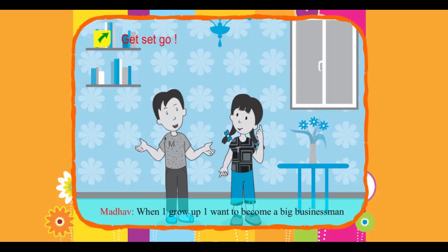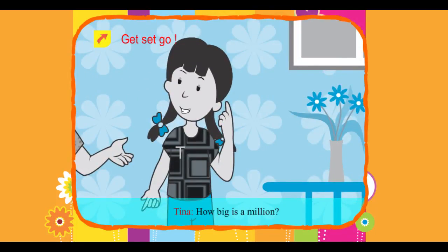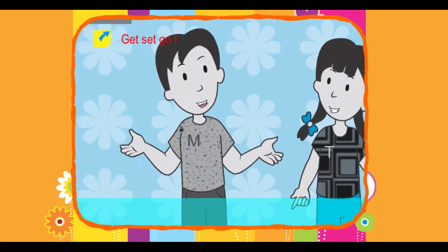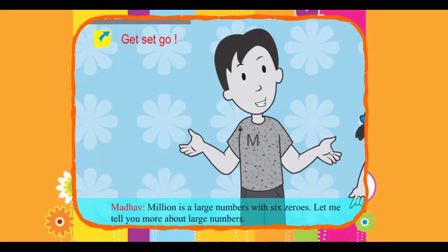Madhav: When I grow up, I want to become a big businessman. Tina: How big is a million? Madhav: Million is a large number with 6 zeros. Let me tell you more about large numbers.